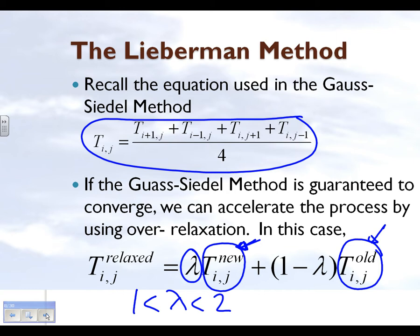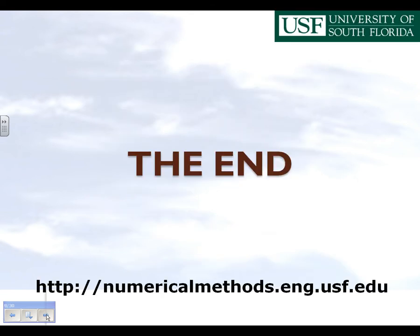So that's what the Lieberman method is all about. It is the same as the Gauss-Seidel method, except that we revise our temperature estimate by giving a weightage to the current temperature from the current iteration and the temperature from the previous iteration. That's the end of this segment, and we will take an example in the next part.